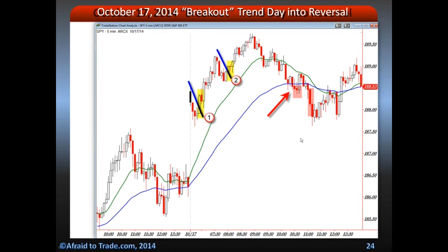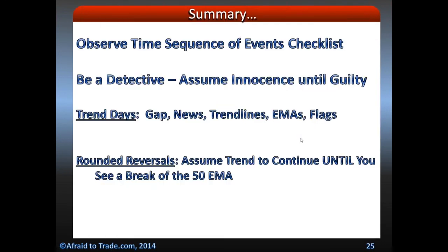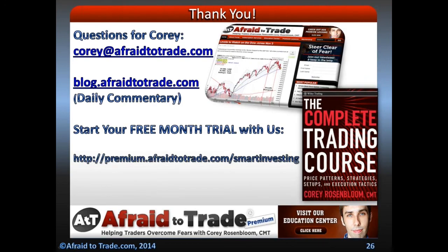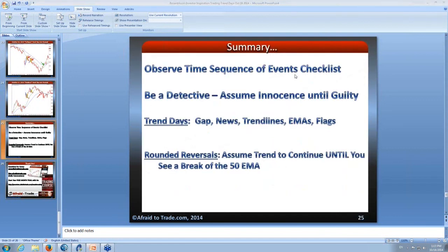So that's generally the thesis. The summary: we need to observe that time sequence — the five-factor checklist from the moment we wake up: overnight Asian market, the hour before the market opens, the actual open gap or not, and the first hour with big candles, big volatility, big volume, big internals. Then be a detective — don't be biased, don't look for things that aren't there, let the market tell you. Assume the market will not be a trend day until it shows gap, news, trend lines, and flags. Then assume the trend will continue until you see an objective break of that 50 EMA. Same thing applies on higher frames as well.